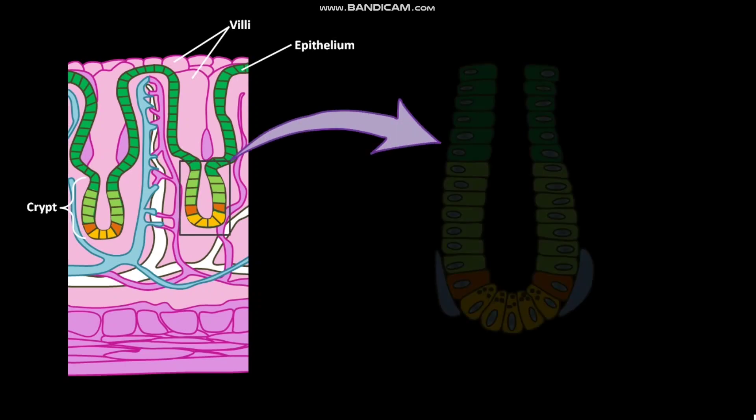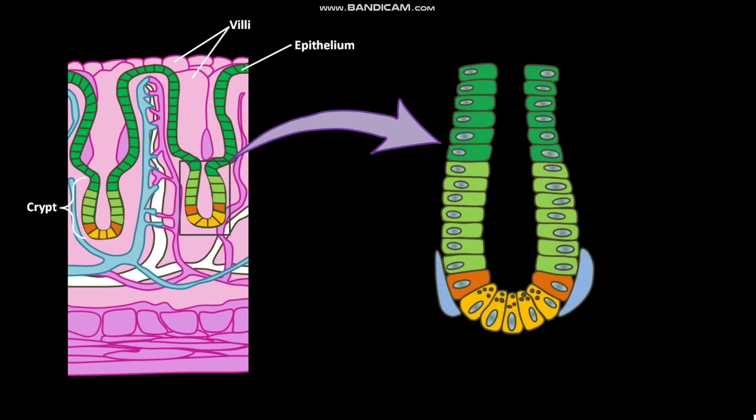If we take a closer look at a crypt, it will look like this. A crypt has the stem cell zone, proliferation zone, and differentiation zone. The cells of the intestinal epithelium continuously regenerate from the cells present in the stem cell zone.